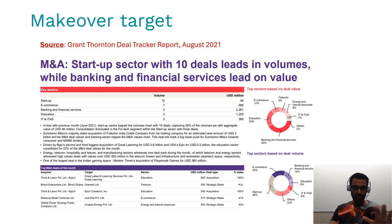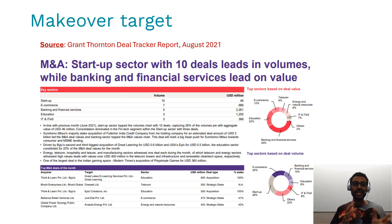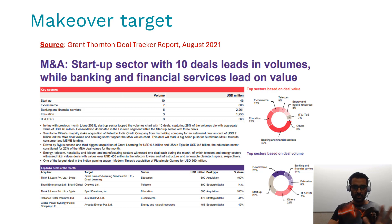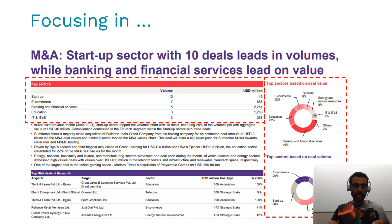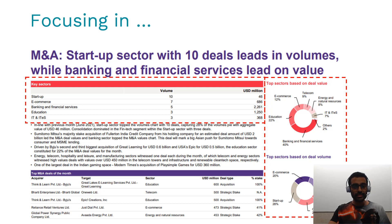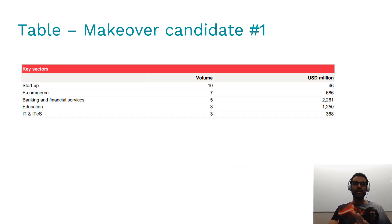This is the makeover target — one slide from the Grant Thornton deal tracker report from August 2021. It's a pretty dense slide: you see a table on top and a couple of donut charts on the right side, and these are our makeover targets for this video. The first thing we're going to do is take a look at this table.